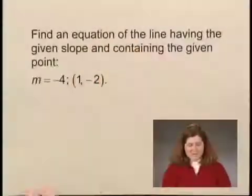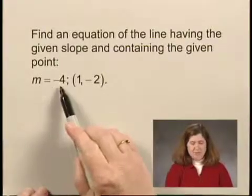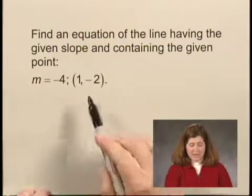In this exercise, we'll find an equation of a line. We're given a slope, the slope of the line m equals negative 4, and a point on the line, the point (1, -2).